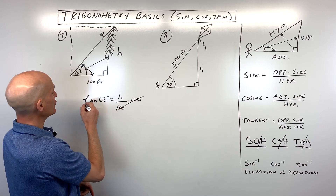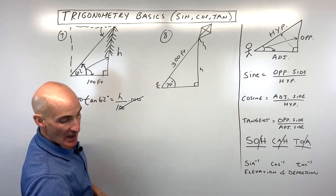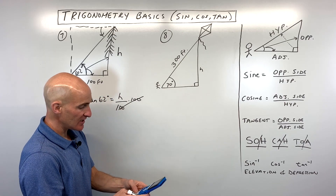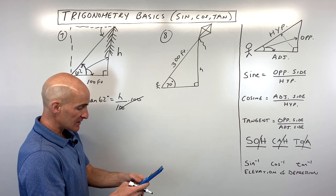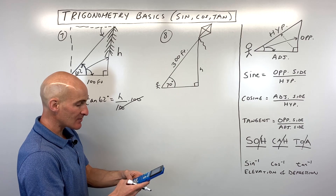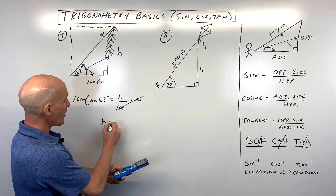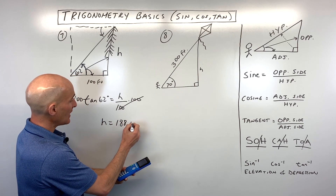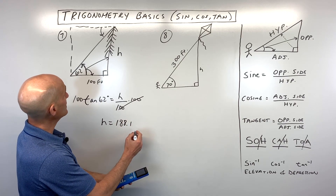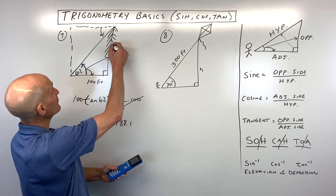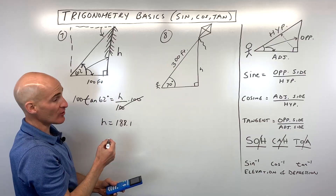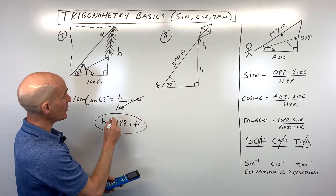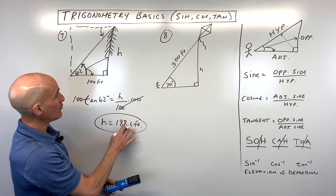Multiply both sides by 100 and we've got it. On the calculator, 100 times the tangent of 62 degrees comes out to about 188.1 feet. That's how tall the tree is — without having to climb it. That's a great example of how trigonometry is really very useful.